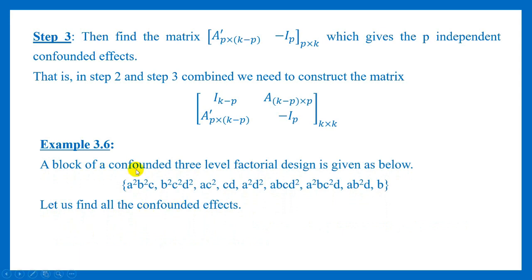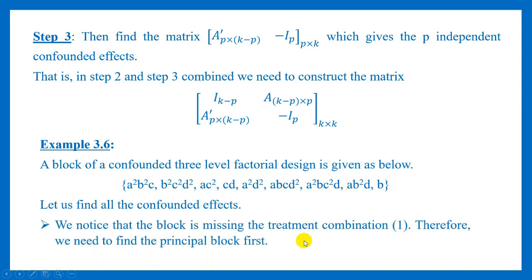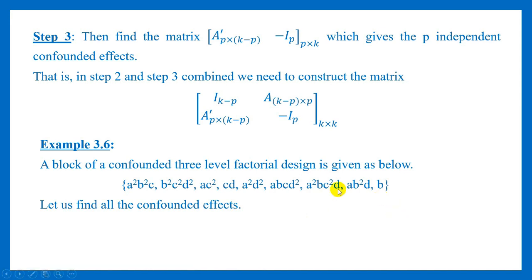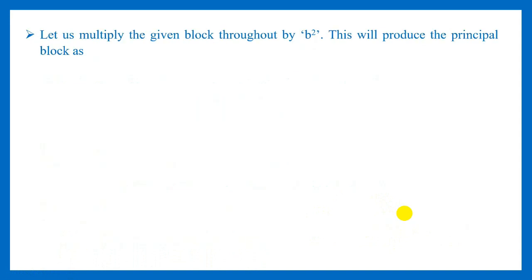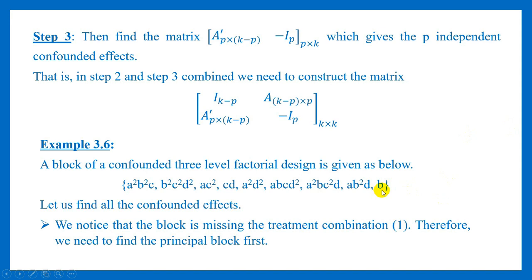Let us discuss an example. Suppose a block of a confounded three-level factorial design is given. There are nine treatment combinations in this block. We need to find the confounded effects. We notice that there is no treatment combination '1' in this block, so this is not a principal block. We need to find the principal block. We notice there is an element B in this block, so if we multiply B by B squared it becomes B cubed, which reduces to 1 because the power 3 evaluated using modulus 3 becomes 0.